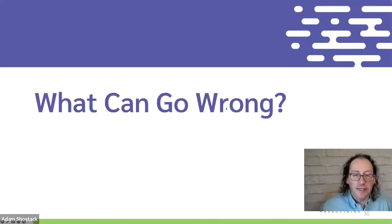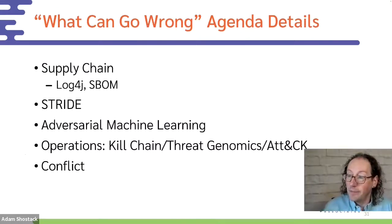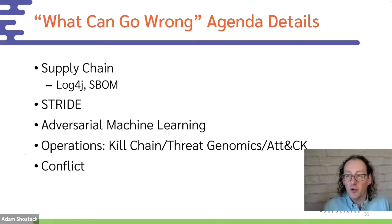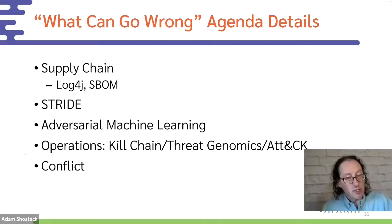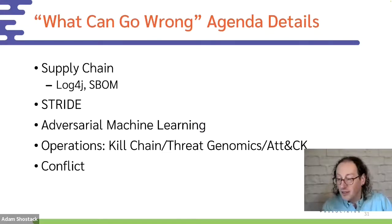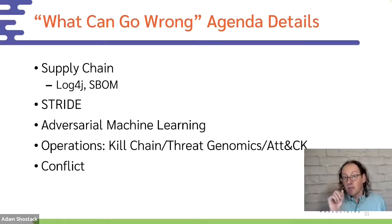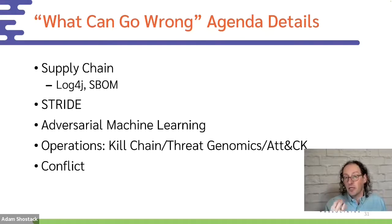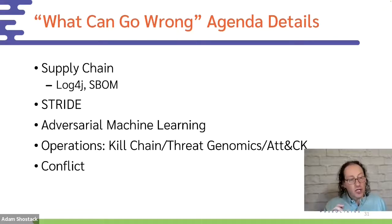There's a lot that can go wrong in supply chain. A lot of the answers to 'what can go wrong' are: we picked up this open source library. It's free — not like beer, not like speech, but free like a puppy. We've taken this free puppy and now we have to take care of it. We're seeing people start to think about the debt and obligation we take on when bringing in a new open source library. I'll talk about STRIDE, machine learning, kill chains, and conflict.